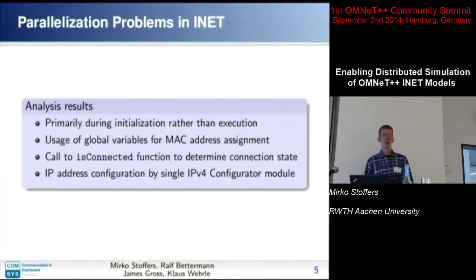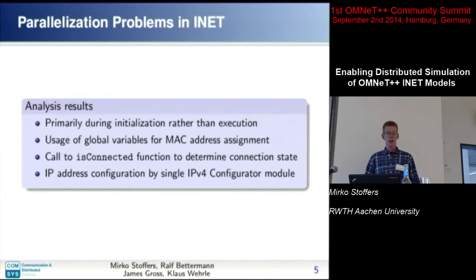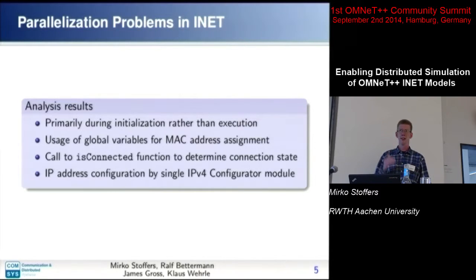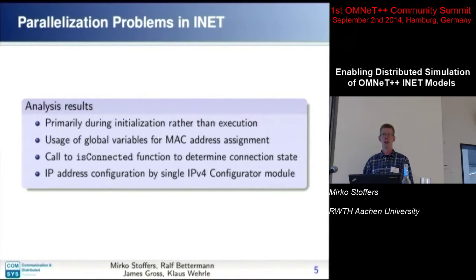The second issue is what Ethernet does during initialization: it has to perform operations only if there is a simulated cable plugged in — i.e., it's connected to a different node. So it calls a function called isConnected, which calls the same function on the remote end of the connection. But when that remote end resides on a different computer, you cannot execute the function there, and you end up with wrong determination of the connection state.